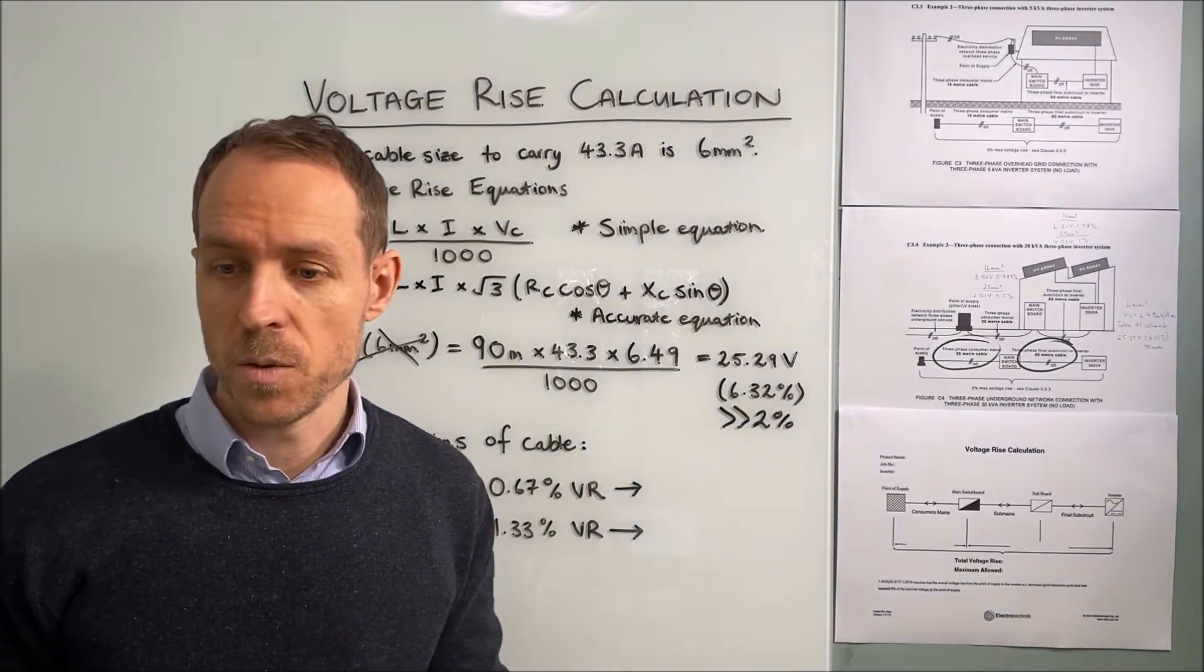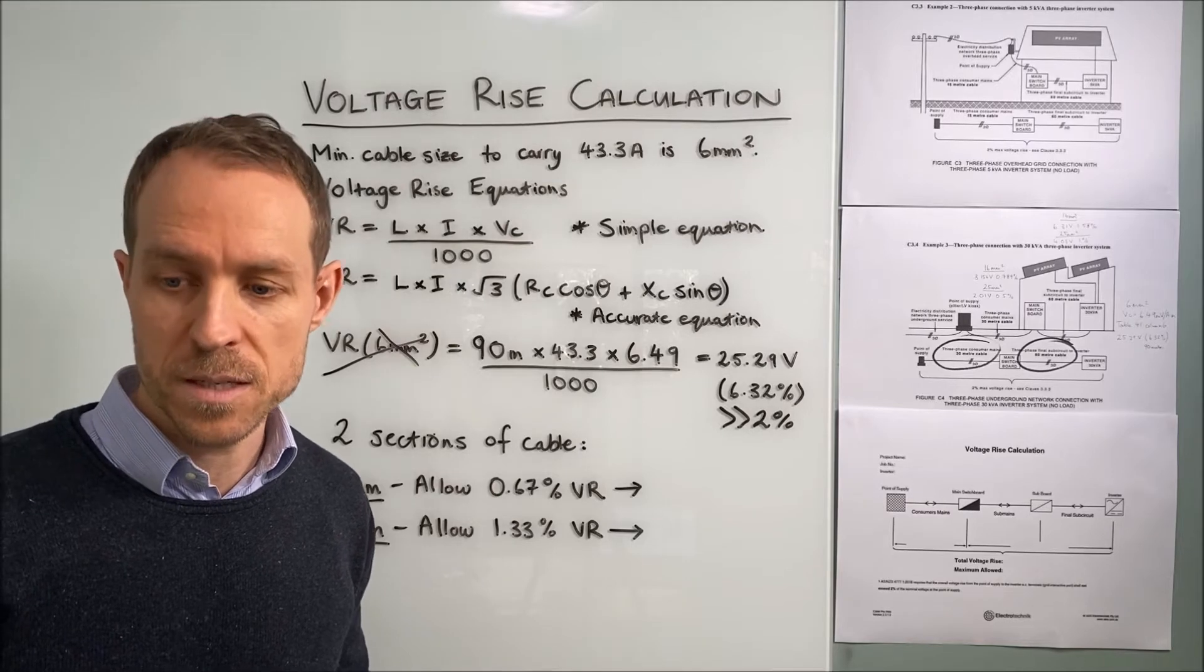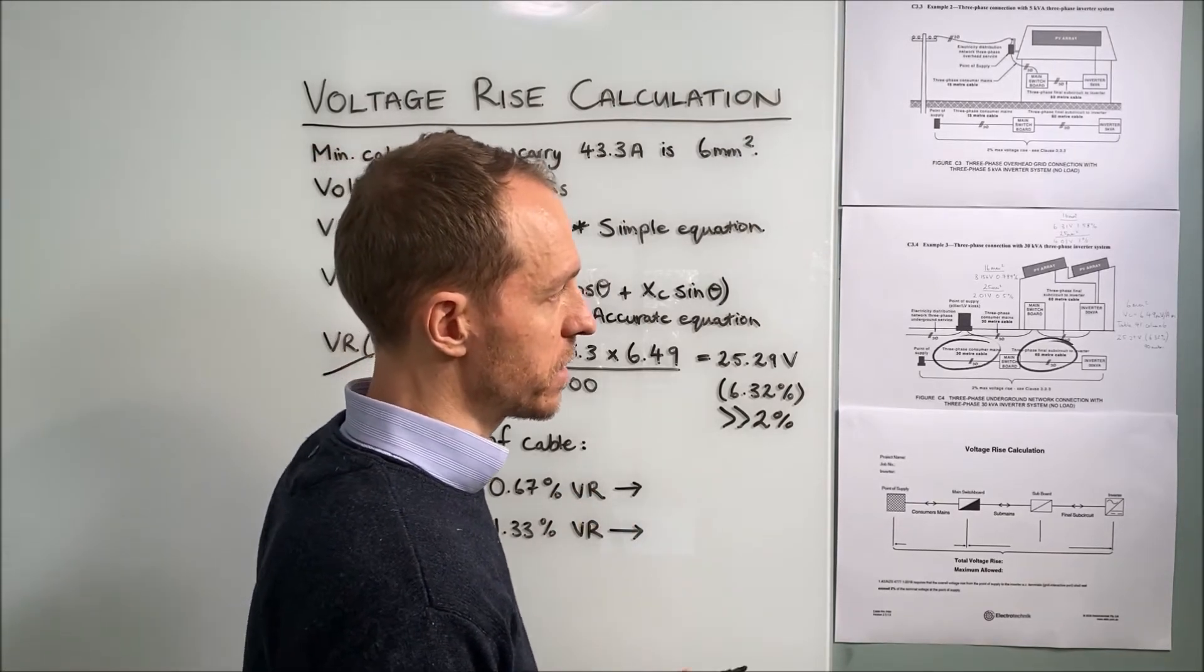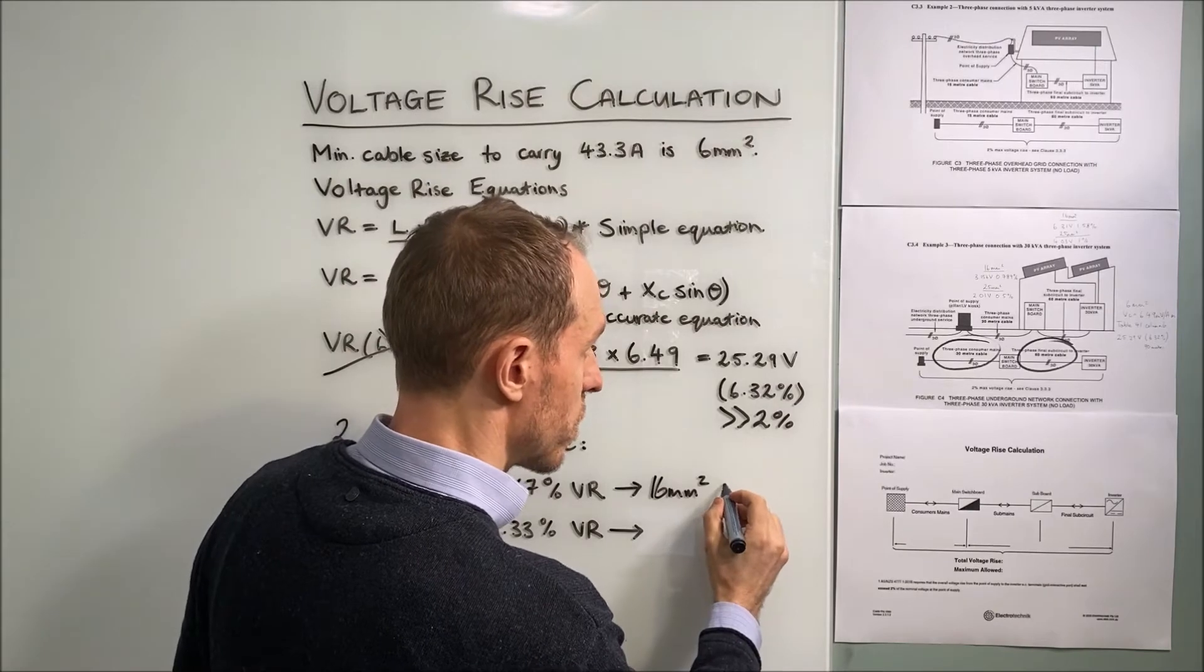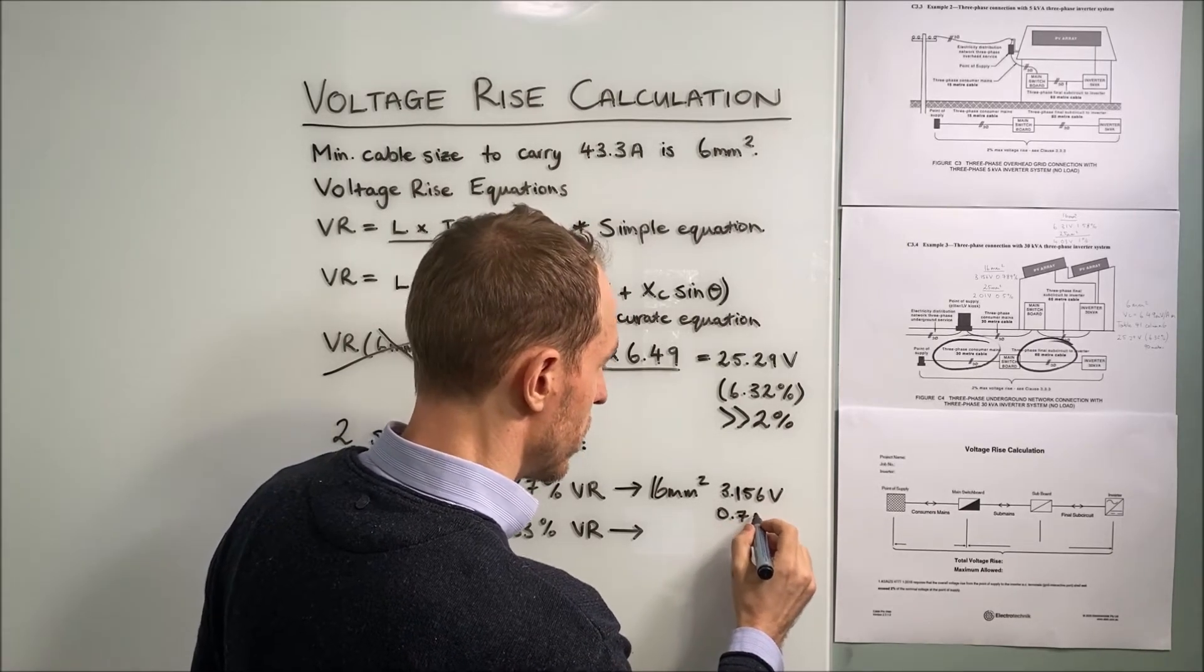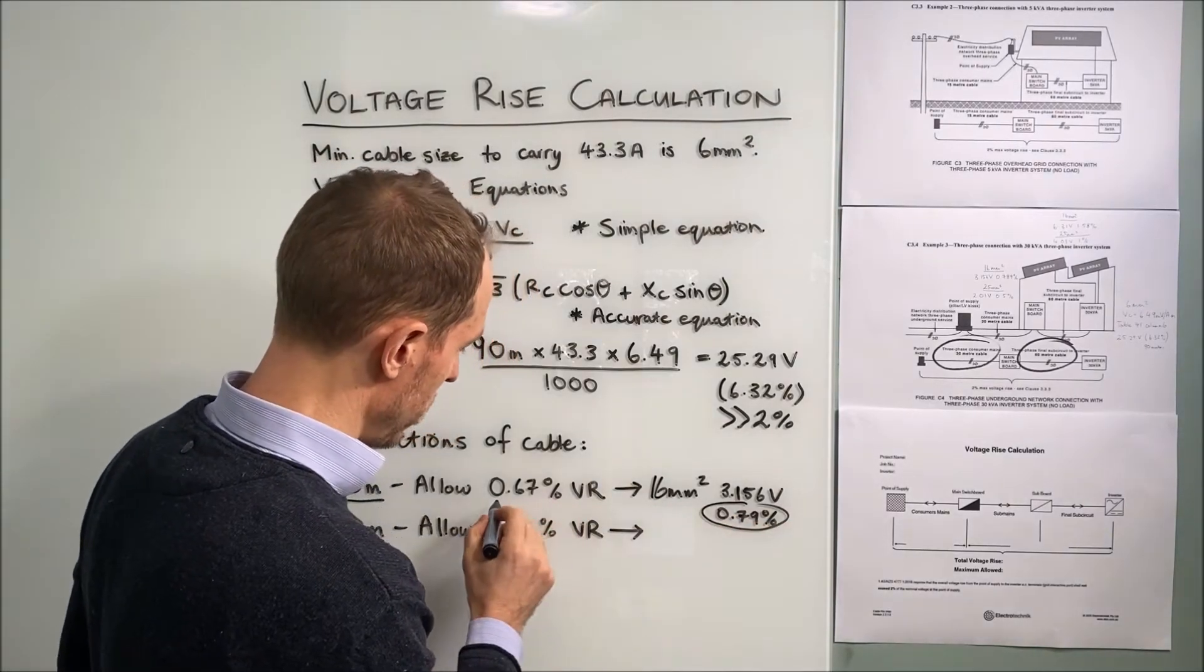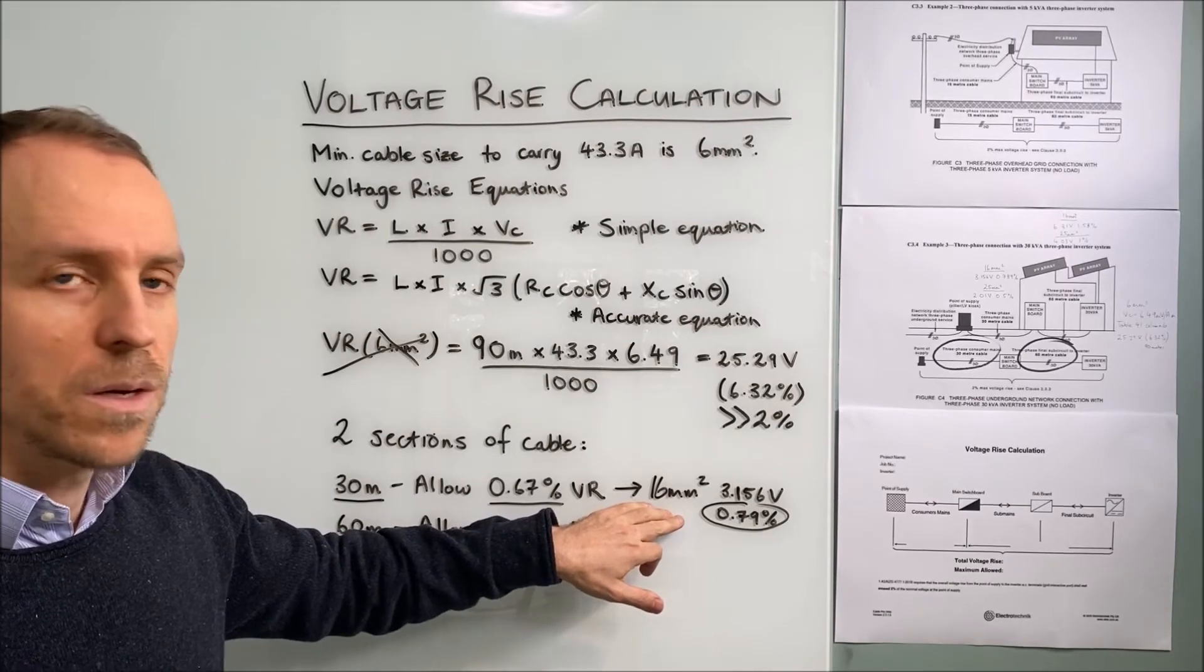Now we've done the calculations already. I'll show you what results we get for firstly say a 16 square millimeters which is much larger than our 6 square millimeters. So we have to go through quite a few iterations by hand to get to this. Now our voltage rise result for 16 square millimeters was 3.156 volts or 0.79%. Using a simple voltage rise equation for 16 square millimeters. Now this 0.79 is larger than 0.67 so 16 square millimeters is not going to meet our voltage rise requirement for that first section.